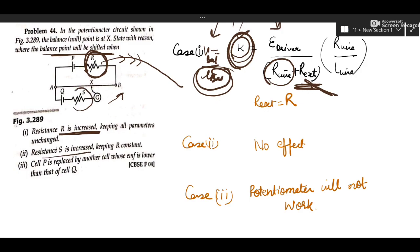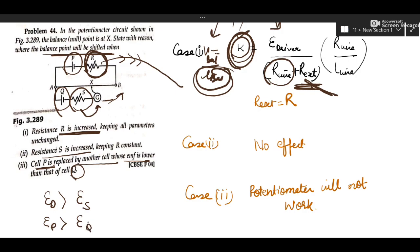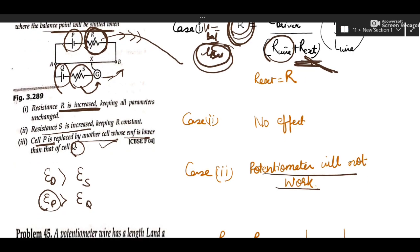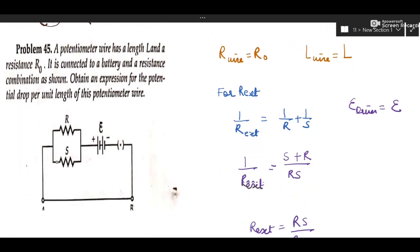When S (the protective resistance for the galvanometer) is decreased, nothing changes in the balance point because its only purpose is to protect the galvanometer. If the driver cell P is replaced by a cell whose EMF is less than secondary cell Q, the potentiometer will not work — the balancing length would be outside the potentiometer wire and no balance point can be obtained.